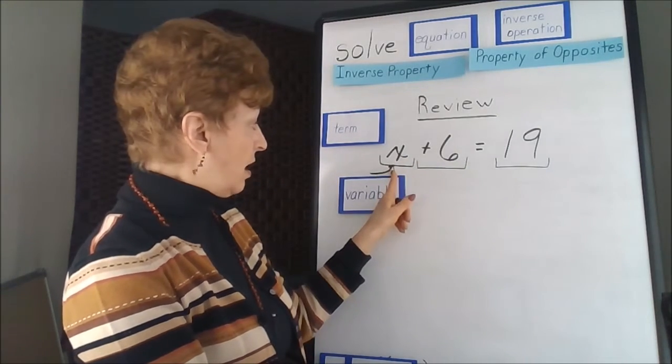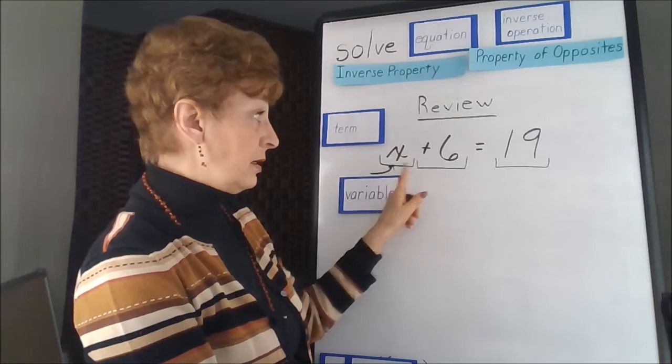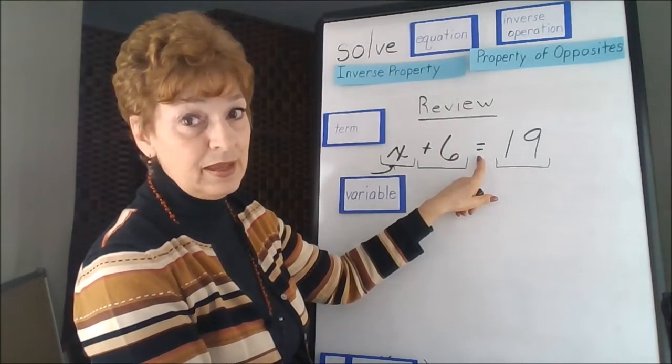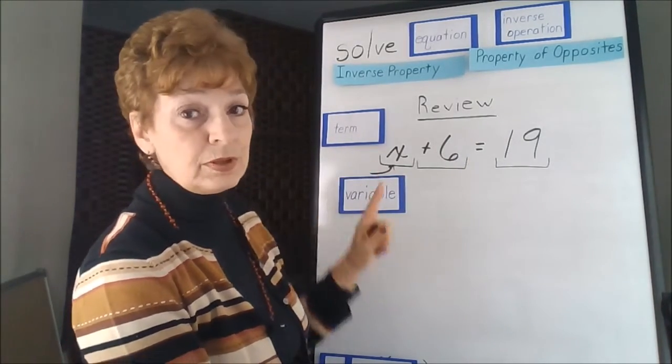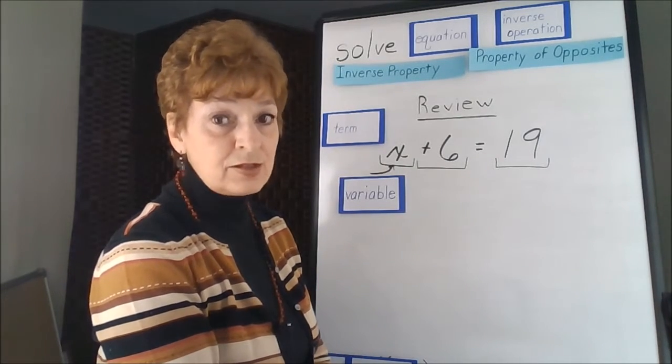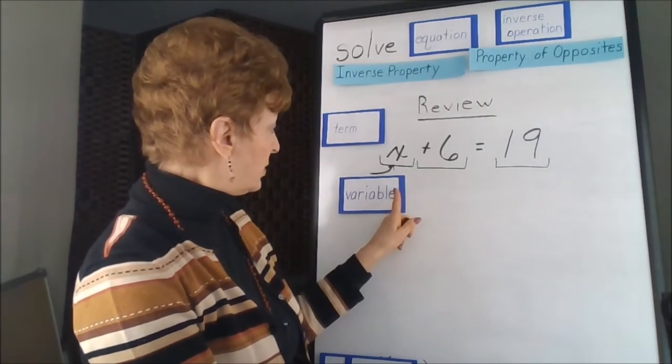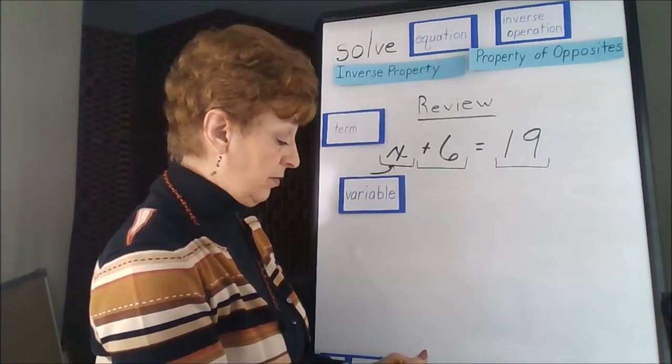So the letter is called a variable until we actually make it equal to something. And then the variable will just have usually one answer to it. So our letter is called a variable.